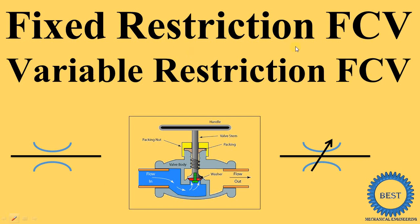In this video, I explained the two types of flow control valve, abbreviated as FCV. The first type is the fixed restriction FCV and the second one is the variable restriction FCV. This is the symbol of fixed restriction FCV and this is the symbol of variable restriction FCV.